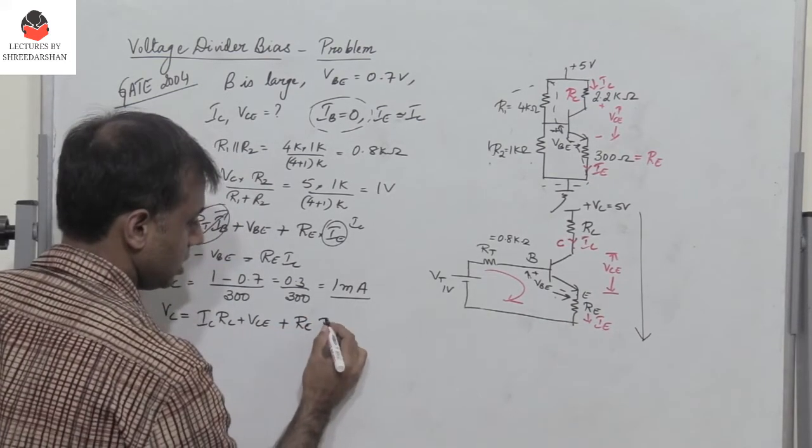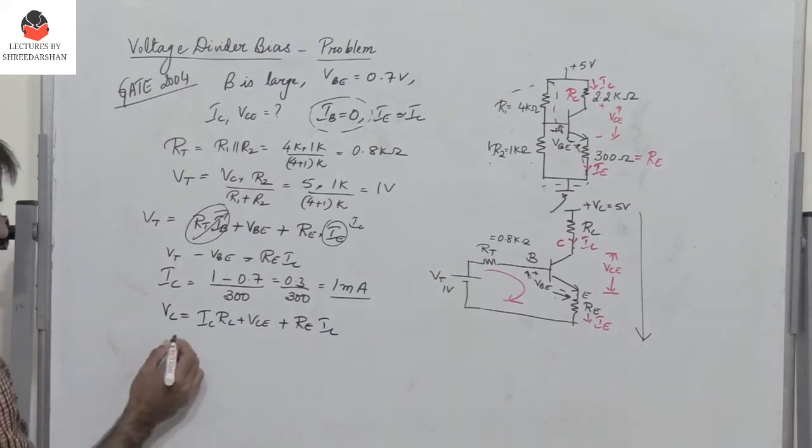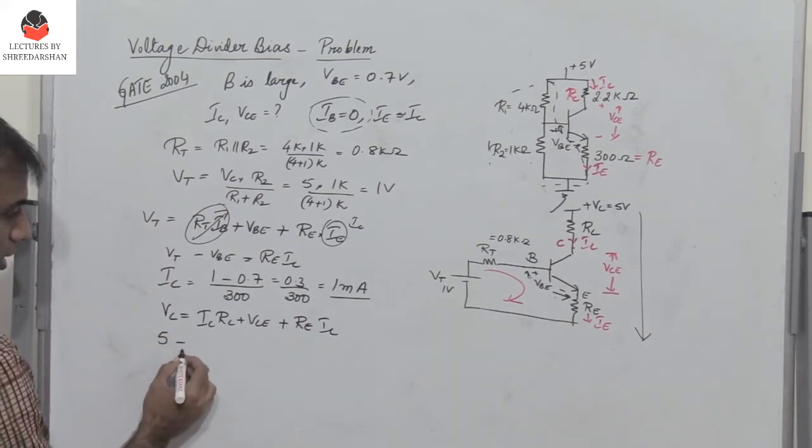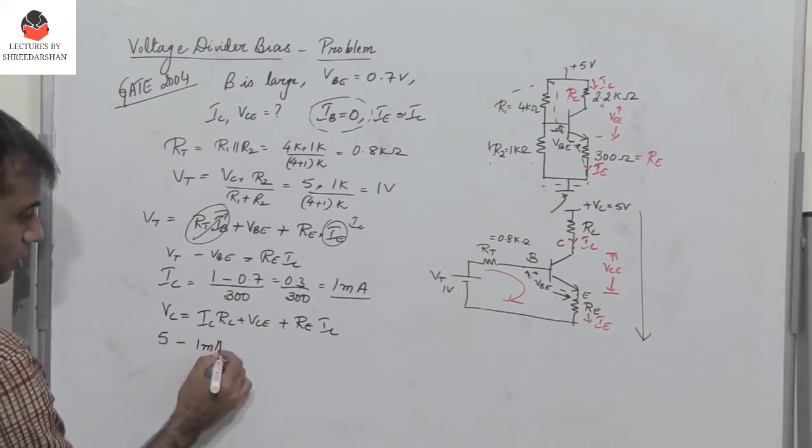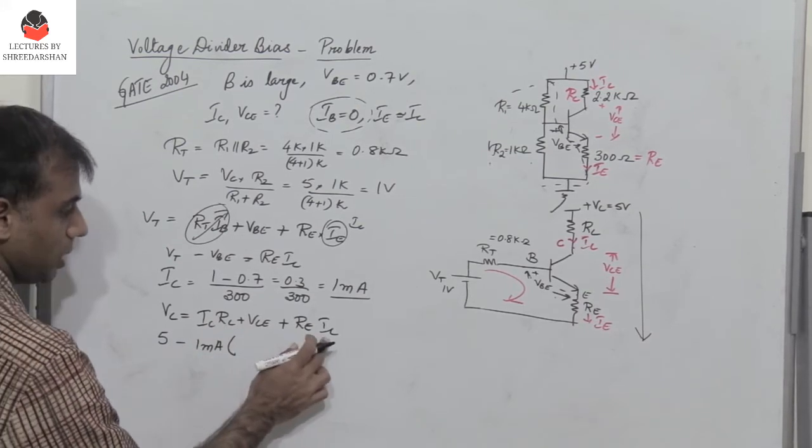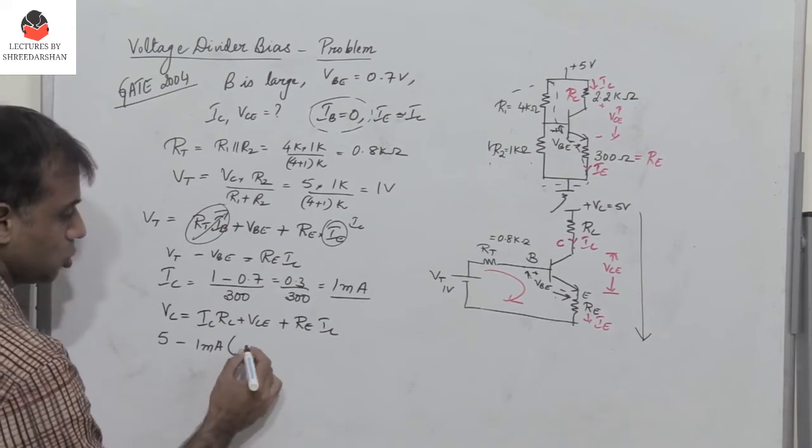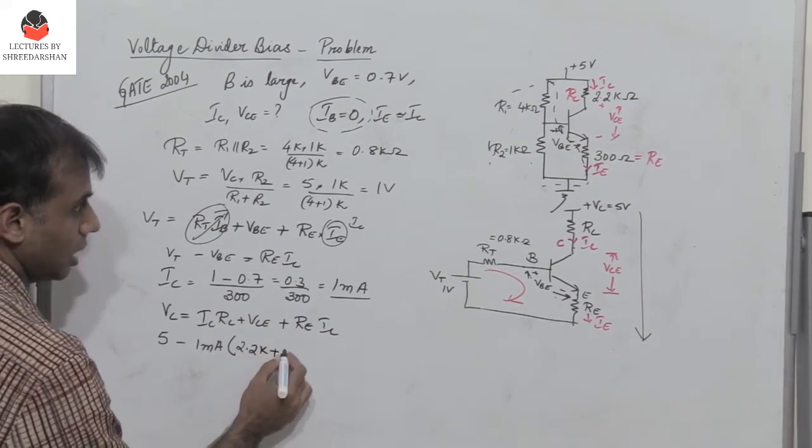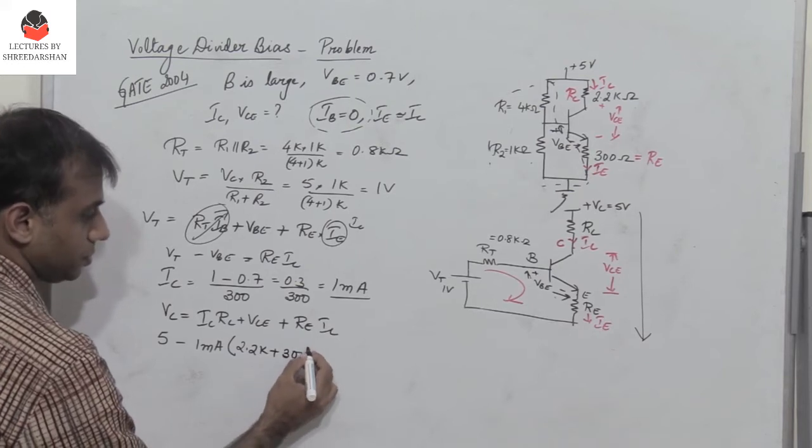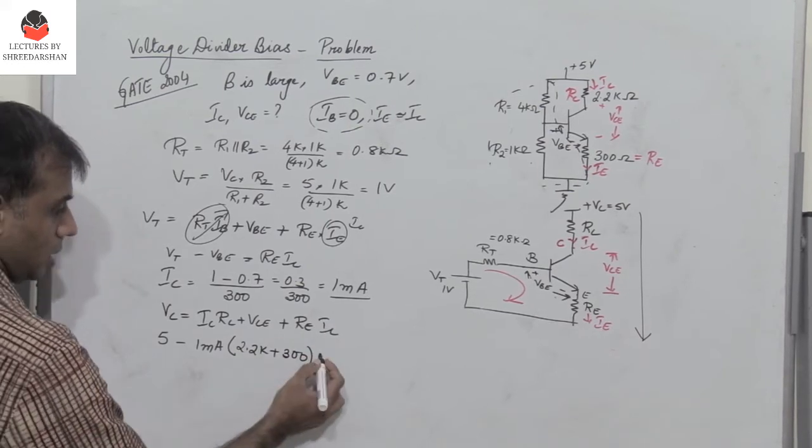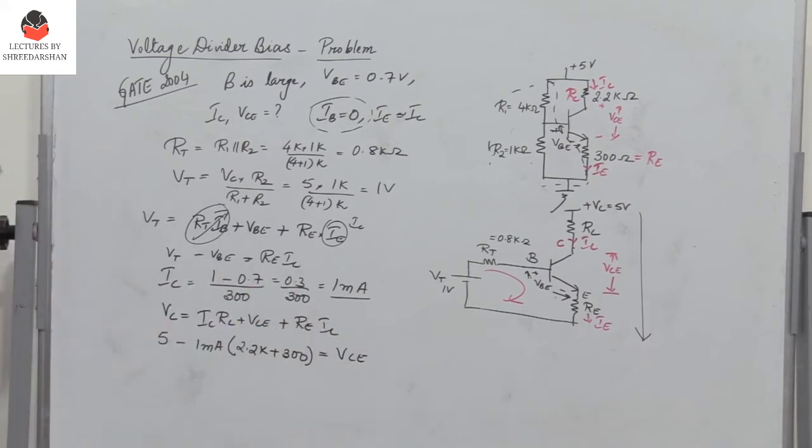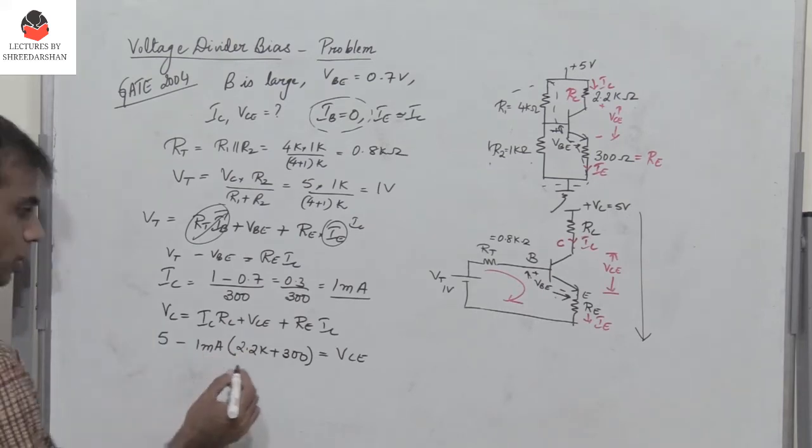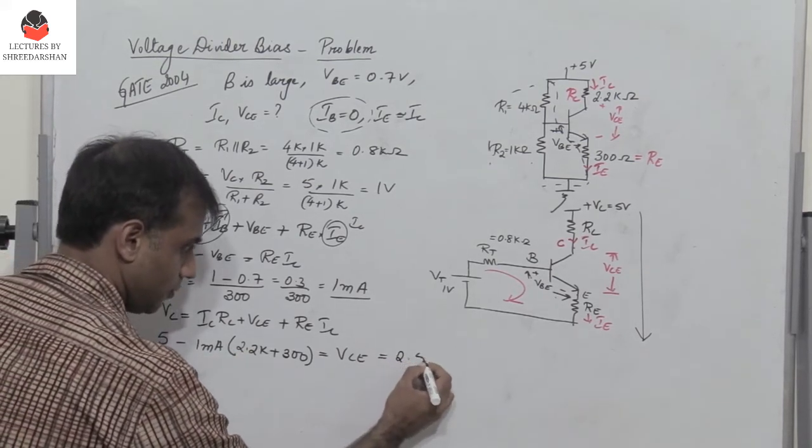I write Ic because both the currents are equal. So Vc is 5 minus Ic, which is 1 milliampere, into Rc plus Re. Rc is 2.2K plus Re is 300, and this equals Vce. So we get 5 minus 1 milliampere into 2.2K plus 300, so I get the value as 2.5 volts.